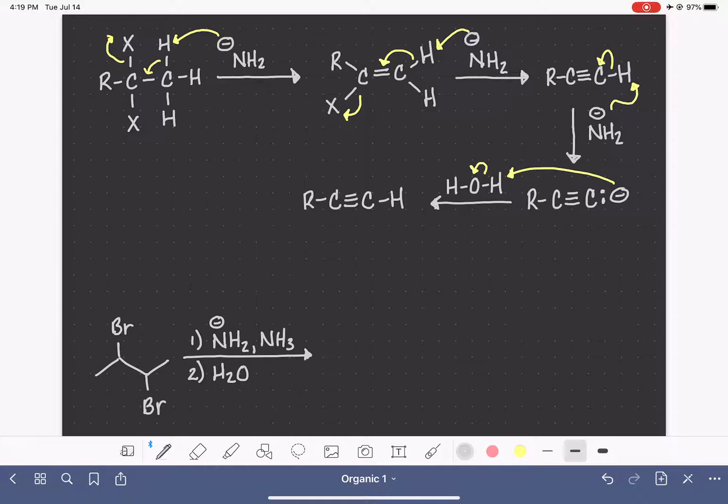One of the really interesting things about this reaction is that regardless of where the halogens are located along the carbon chain, this reaction always produces a terminal alkyne. So in this example with the mechanism and the examples on the previous slide, it was clear that it was set up to produce a terminal alkyne.